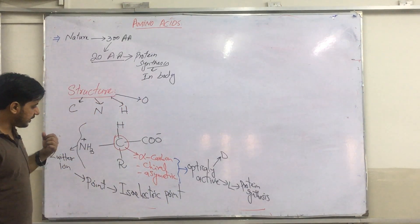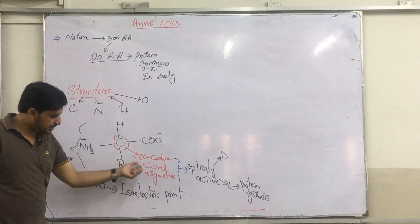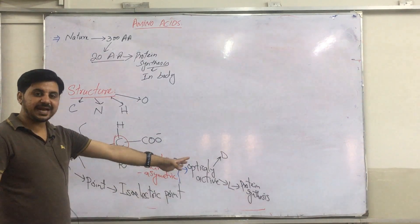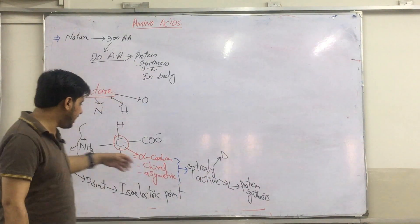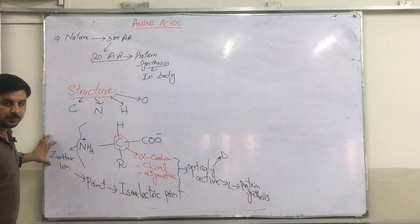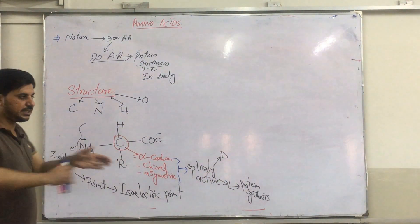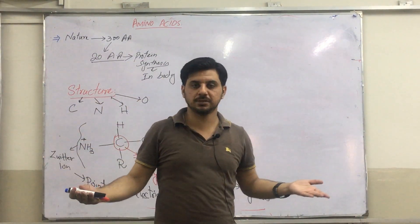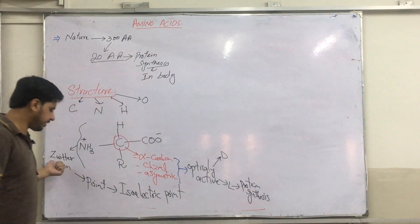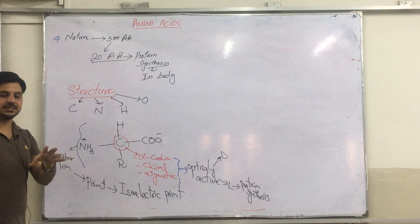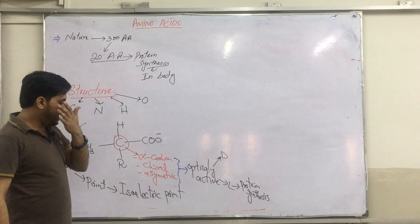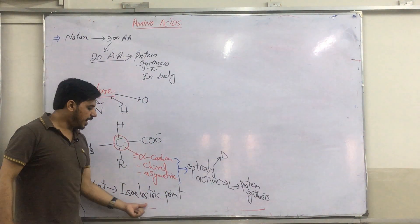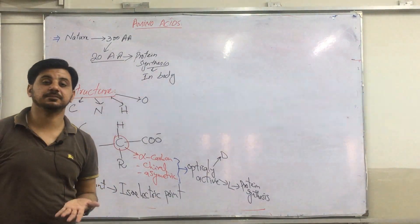So, the next thing after the characteristic of this amino acid, the optically active characteristic, is that this amino acid can form zwitterion. What is zwitterion? Whenever it exists in positive as well as negative form, having zero charge, it is called zwitterion. And the pH at which it exists as zwitterion is called isoelectric point, PI.